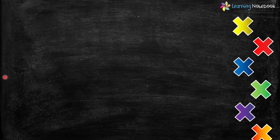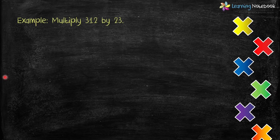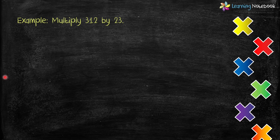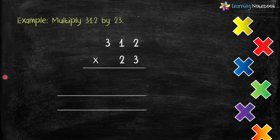Let's take an example: multiply 312 by 23. We will do such multiplication in three steps, so let's first understand these three steps.